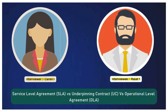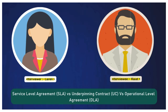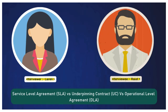Can you explain the difference between a service level agreement — SLA — an underpinning contract — UC — and an operational level agreement — OLA? An SLA is between the service provider and the customer, outlining service expectations. An underpinning contract — UC — is between the service provider and a third-party supplier that supports the SLA. An OLA — operational level agreement — is an agreement between different teams within the service provider to support the SLA. Ultimately, all three support the SLA so that service is delivered efficiently and on time.